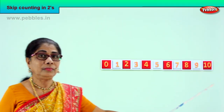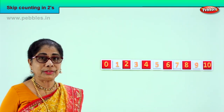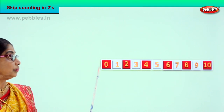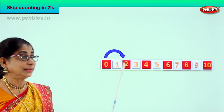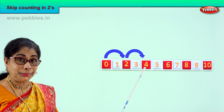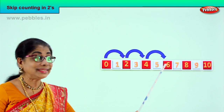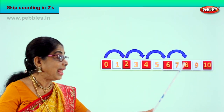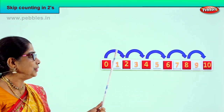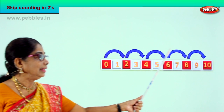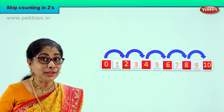We have zero to ten numbers. We are going to skip count in twos. One, two — all right? After two: three, four. After four: five, six. After six: seven, eight. And finally: nine, ten. You learn to skip and count. Yes? Skip counting in twos.